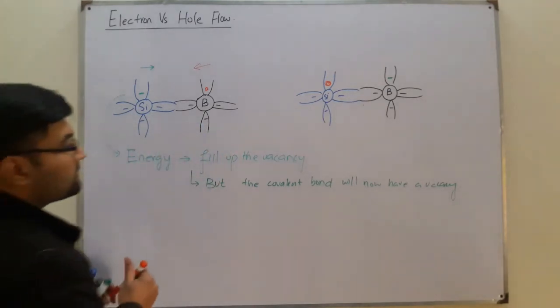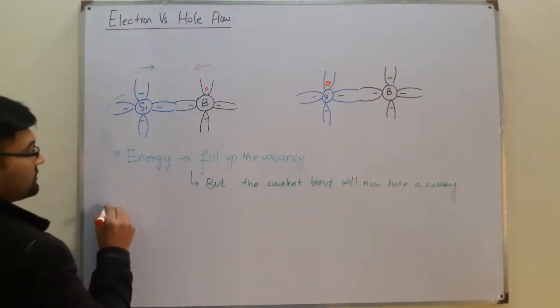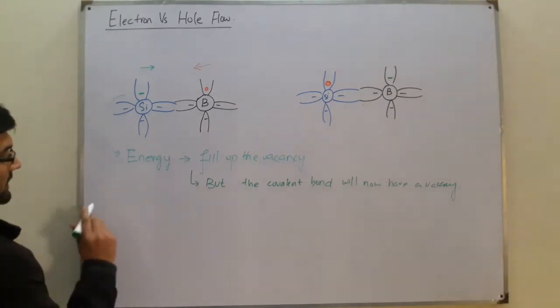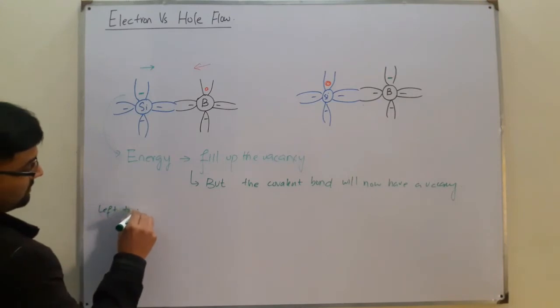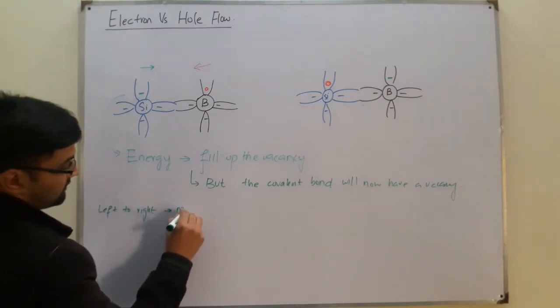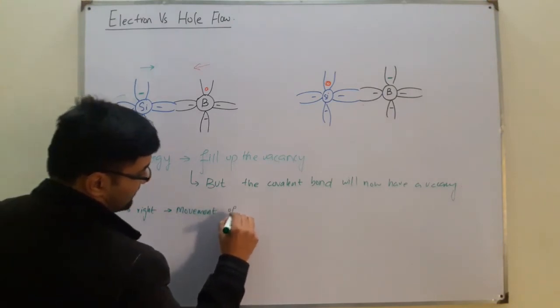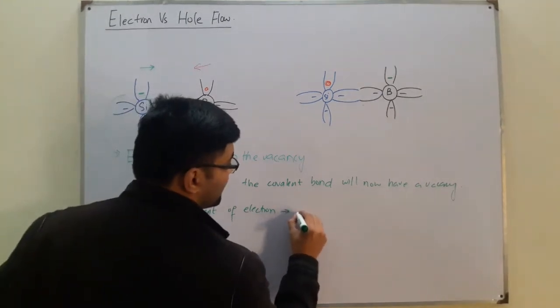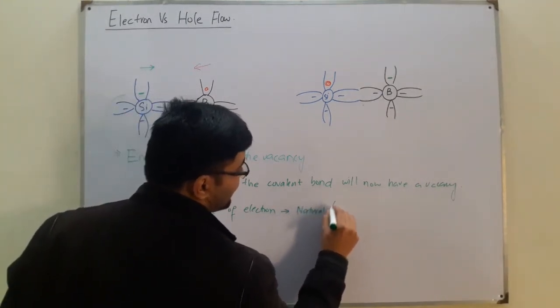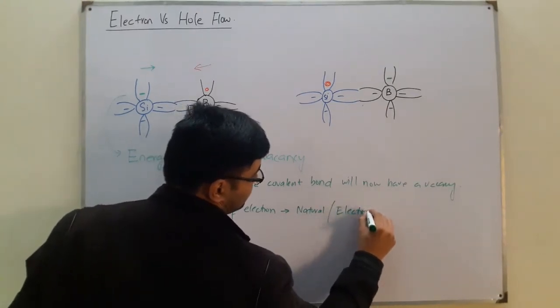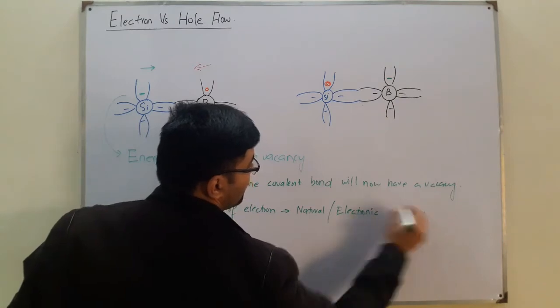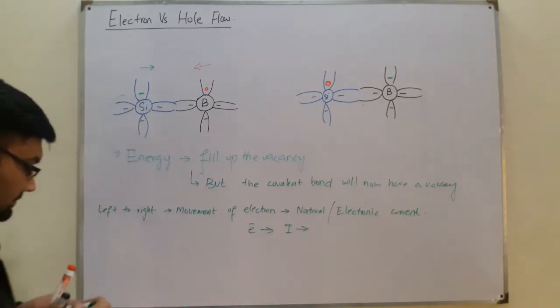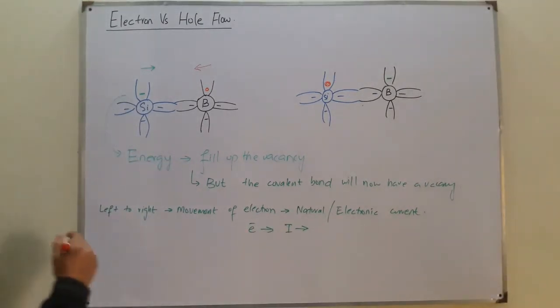This movement of electron, from left to right with the green color, was the movement of electron. And this is called the natural current or the electronic current, which means that if electron is moving in this direction, the current is also in this direction.